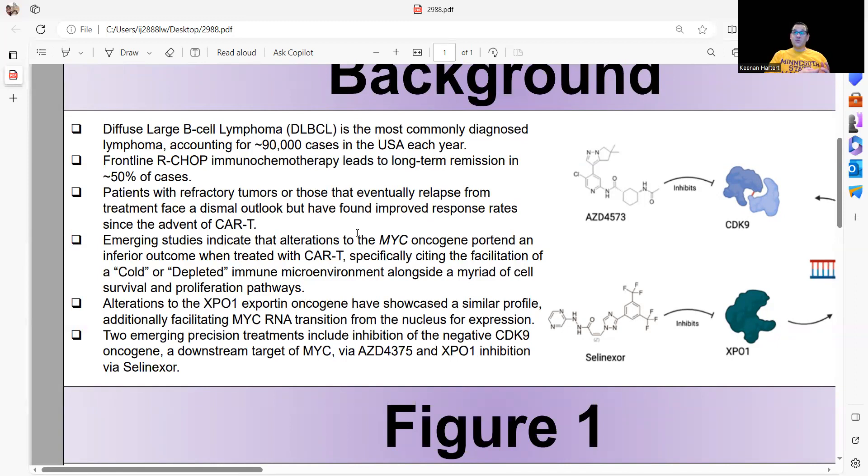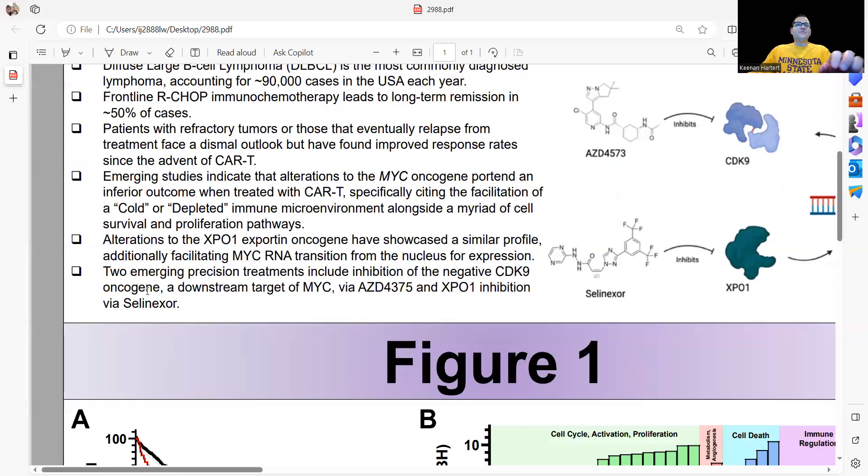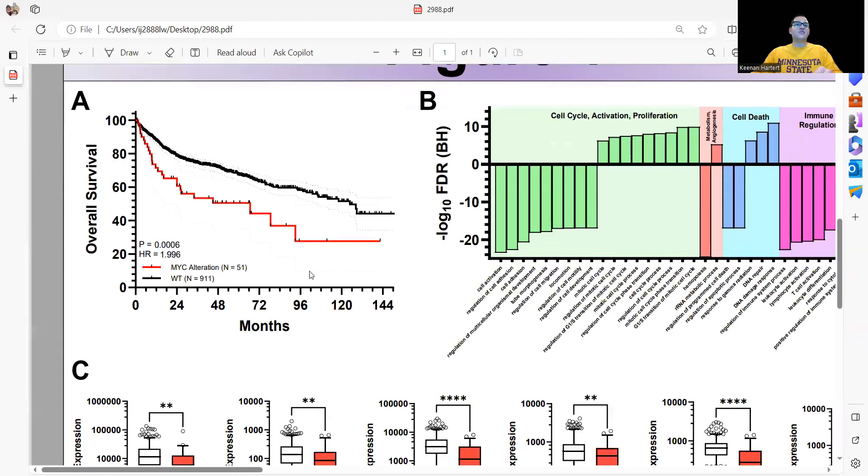However, not everybody does super well with CAR-T. One of the prognostic factors that says you're not going to do well is MYC alterations to that oncogene. Equally, the association with a cold or devoid tumor microenvironment is strongly associated with inferior prognosis. Emerging treatments include a combination between the CDK9 inhibitor AZD4573 and the XPO1 inhibitor Selenexor. So let's get to it.